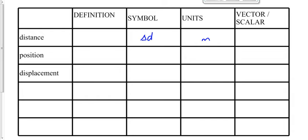There has to be a reference point because position is a vector quantity, so we have to define it relative to something — it has to have a direction. It doesn't do any good to say 'my position is three meters.' Three meters north of the whiteboard tells us something. The symbol for position is D with a half arrow over it, and the units are meters.